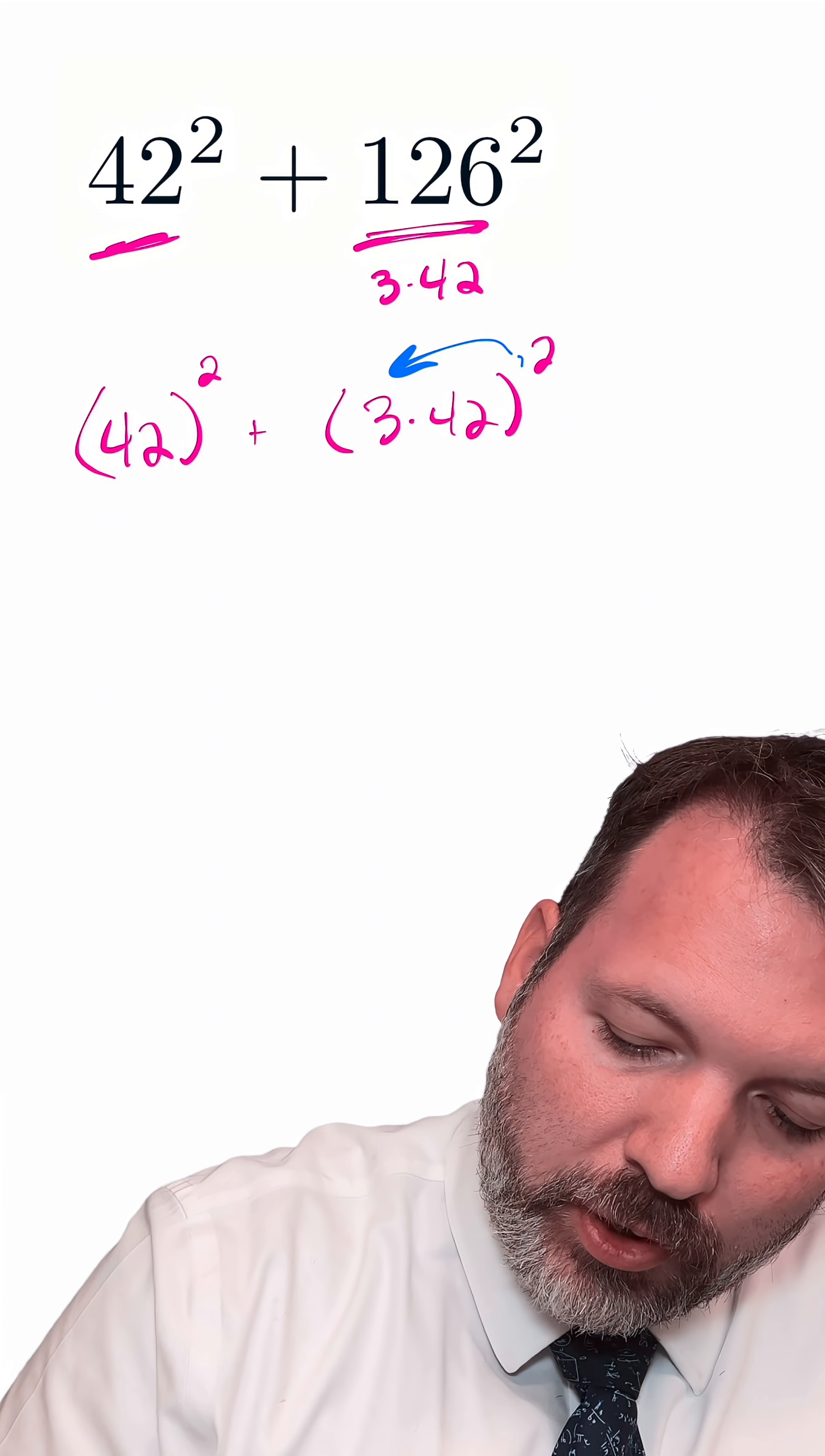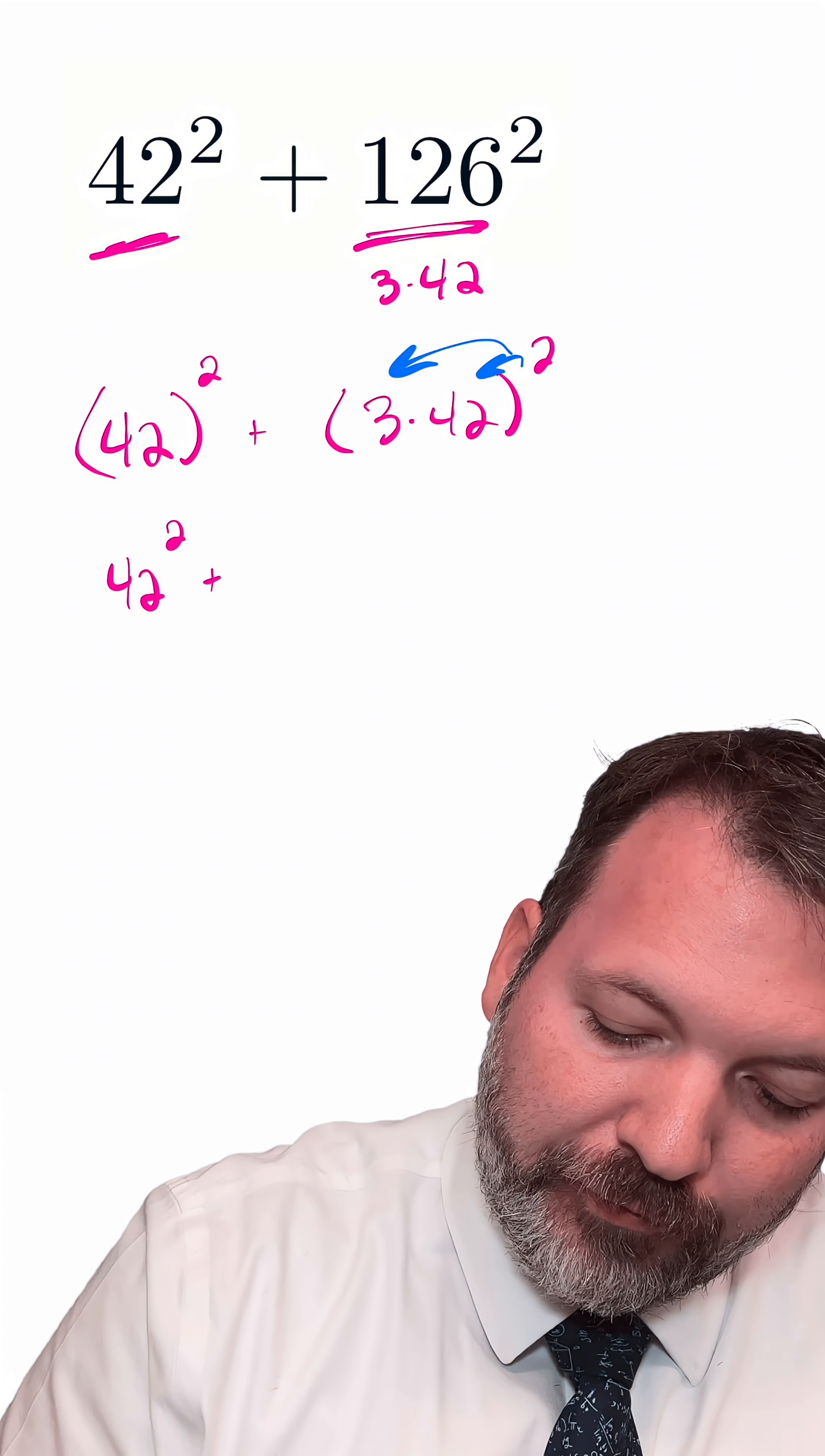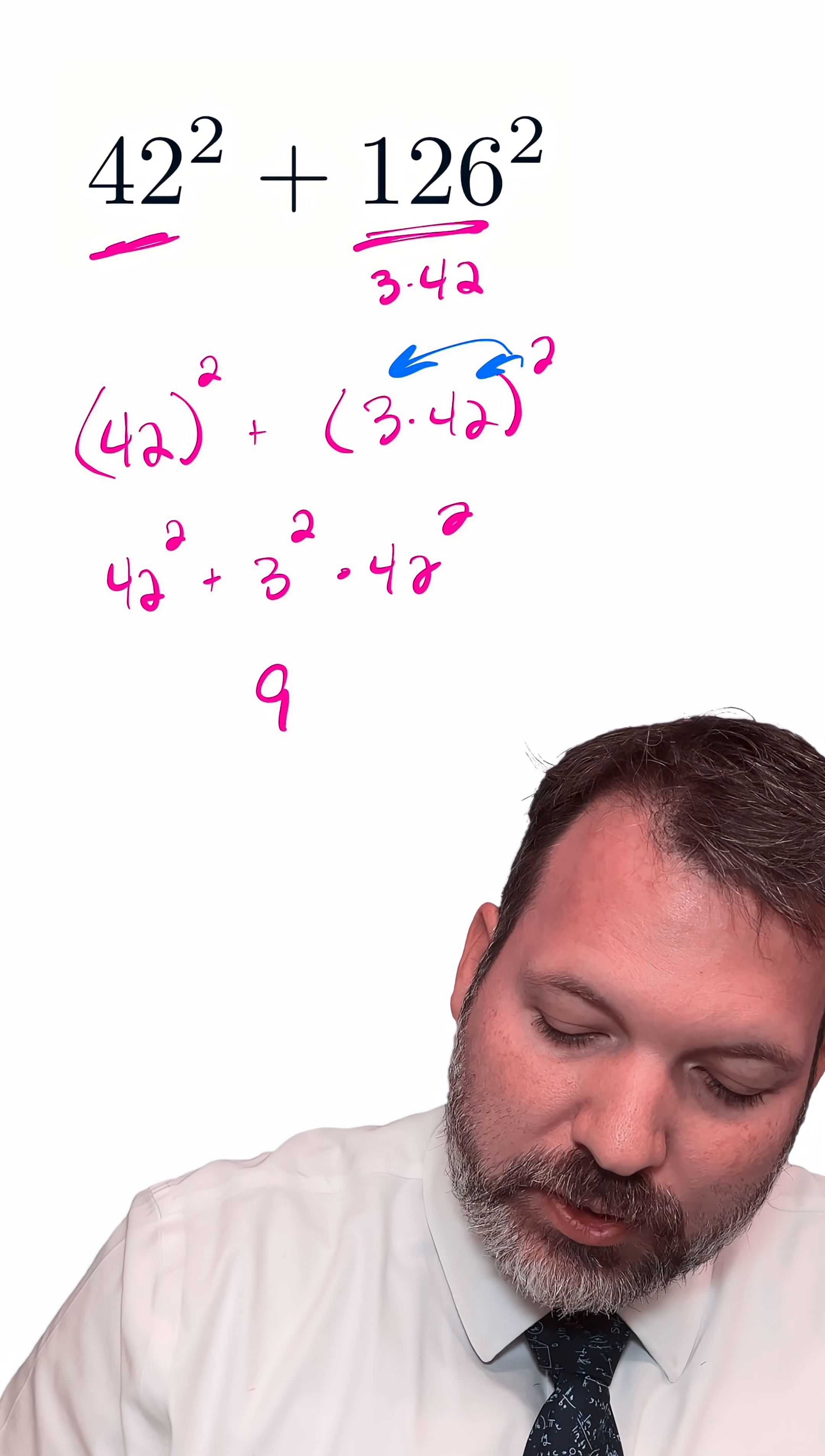We can distribute a square over a product. So in fact, this is the same thing as 42² + 3² × 42², and 3 squared, of course, we know pretty easily is 9.